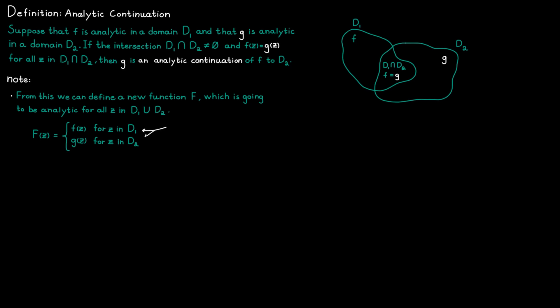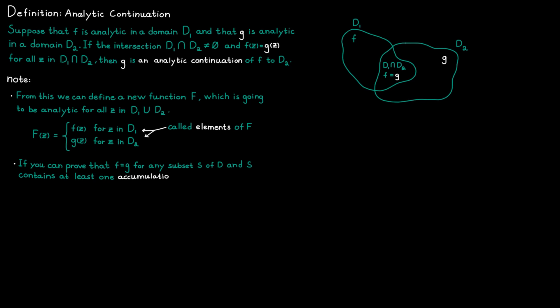The two functions f and G are called elements of a function capital F. When doing analytic continuation, two other things are good to know. First, if you can prove that f and G agree on any small subset S of the domain D, and S contains at least one accumulation point — meaning at least one non-isolated point — then you know that f and G agree on the whole domain D. Second, if an analytic continuation exists, it must be unique.